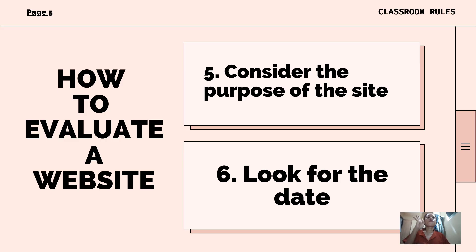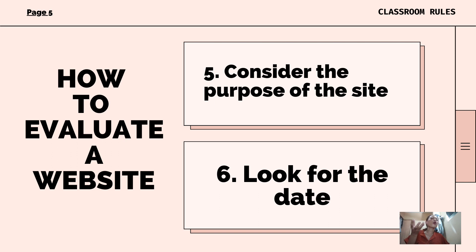Fifth, consider the purpose of the site — think about the purpose of the site and whether it meets your needs. Sixth, look for the date. It is important to consider whether the information is current enough for your topic. You can look for when the article was written or when it was last updated.